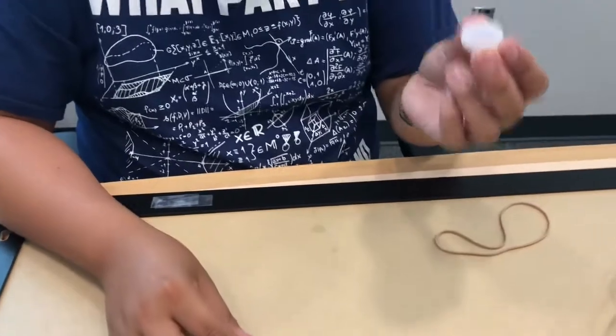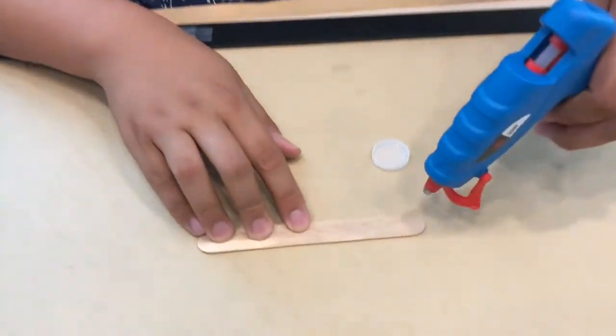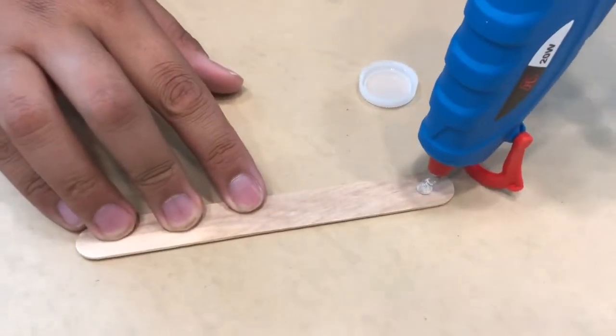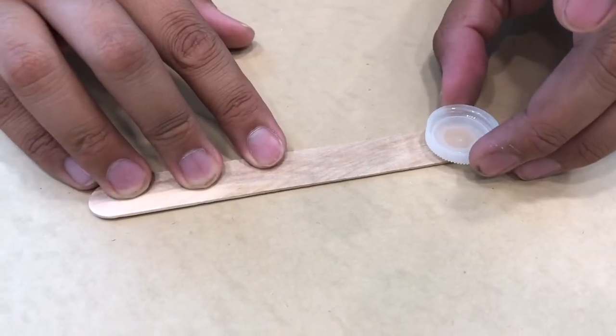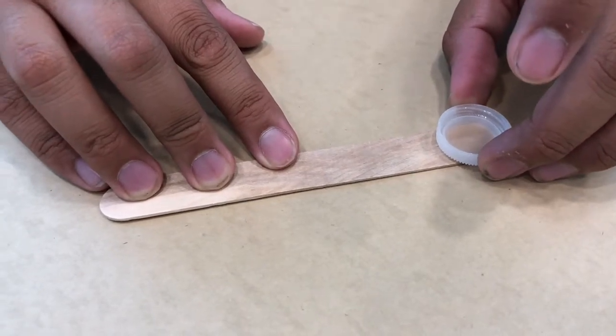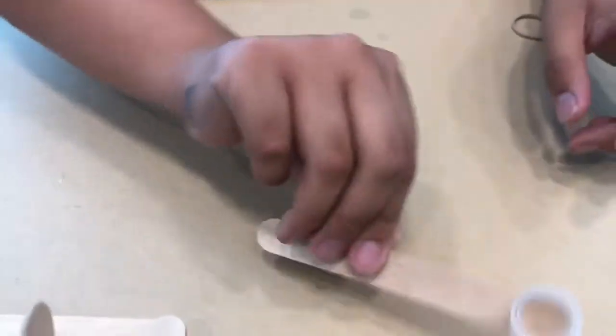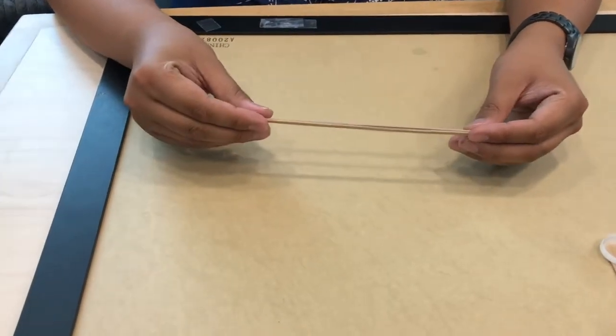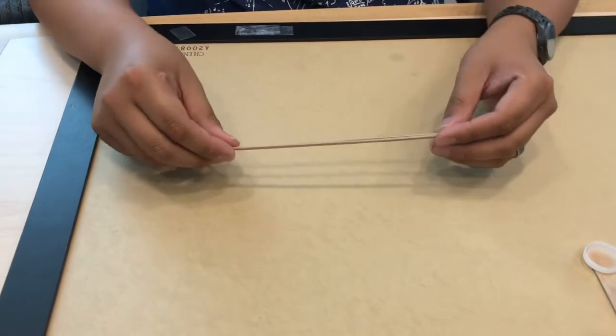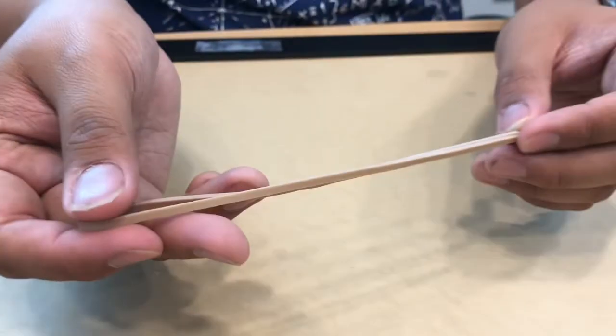We're going to take our final popsicle stick, our 11th popsicle stick, and we're going to glue it to our bottle cap. The bottle cap is going to be the place where we load up our projectiles. So we take just one dab of the hot glue, take the bottle cap, and just as you press it down, you can see it's a nice, even circle. Now we just wait a moment to let both of those dry.